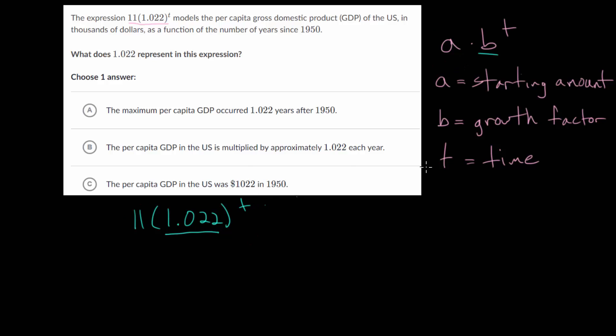Whereas this 11, that's our starting amount. And t, of course, is our variable for time. So our growth factor, that's the amount we'll be multiplying by from year to year. And we can find that right here for letter B. The per capita GDP in the U.S. is multiplied by approximately 1.022 each year. So B would be the correct answer based on comparing it to the formula.